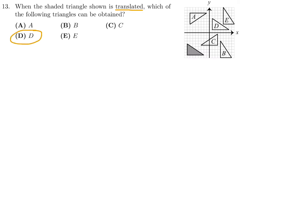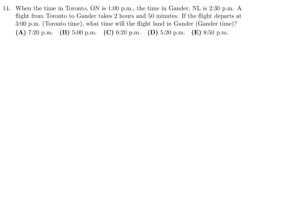The answer is D. Therefore number 13 is D. When the time in Toronto, which is where I'm from by the way, is 1 p.m., and the time in Gander Newfoundland is 2:30, a flight from Toronto to Gander takes 2 hours and 50 minutes. If the flight departs at 3 p.m. Toronto time, what time will the flight land in Gander? So it departs at 3 p.m. and then it takes 2 hours and 50 minutes. So in Toronto time you will arrive in Gander at 5:50, but to get Newfoundland time we have to add what looks like an hour and 30 minutes. So add an hour and 30 minutes to 5:50 and that brings you at 7:20 p.m.